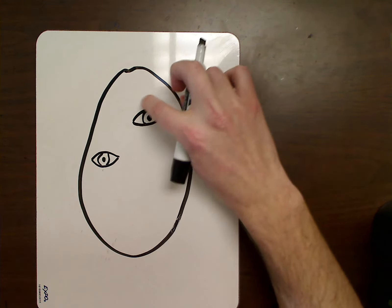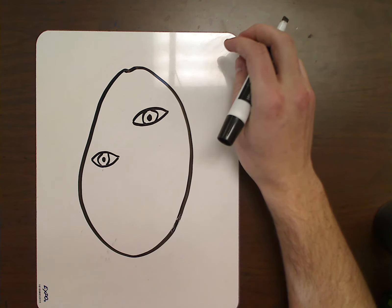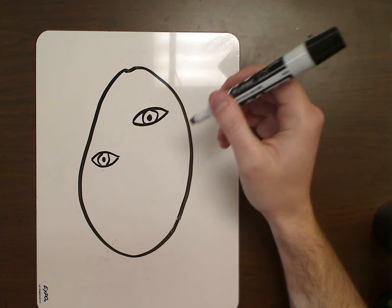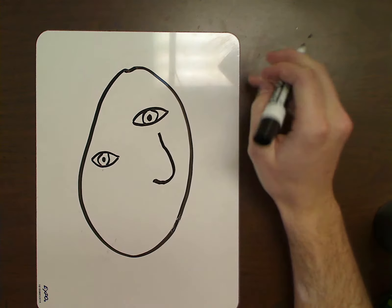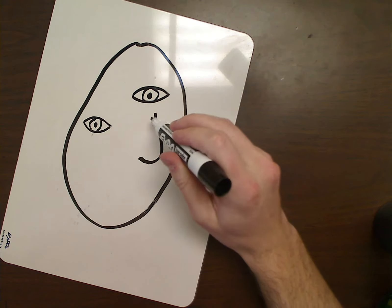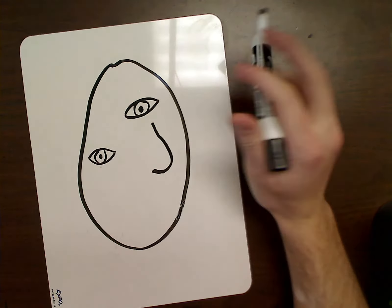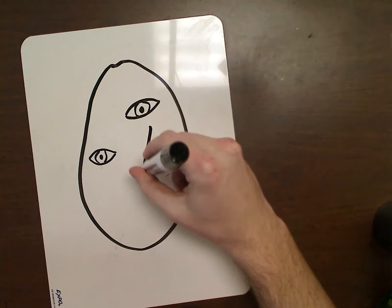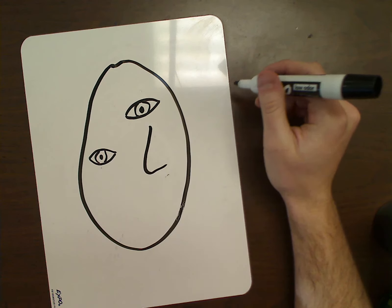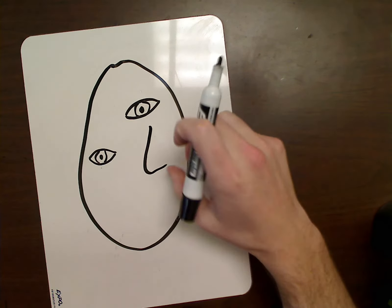Next step, we can do the nose next. An easy way to do a nose, you could just do kind of like a little sideways J shape, so it looks like a J. Or you could even do an L shape as well. It kind of looks like an L. Both of them work as a nose.